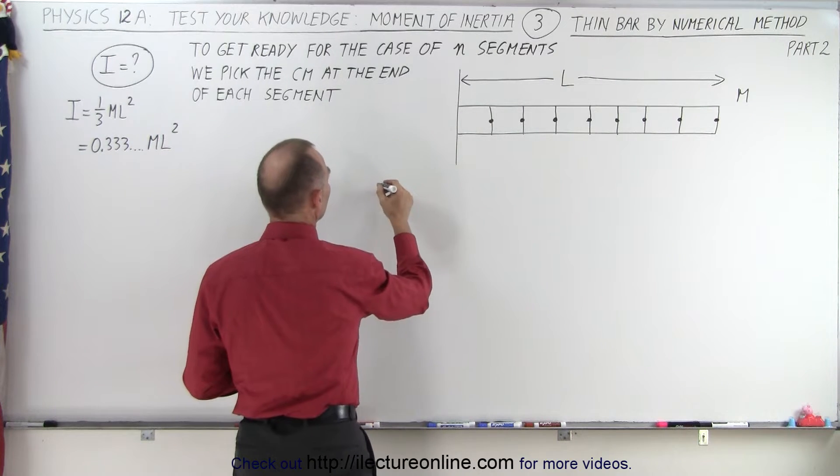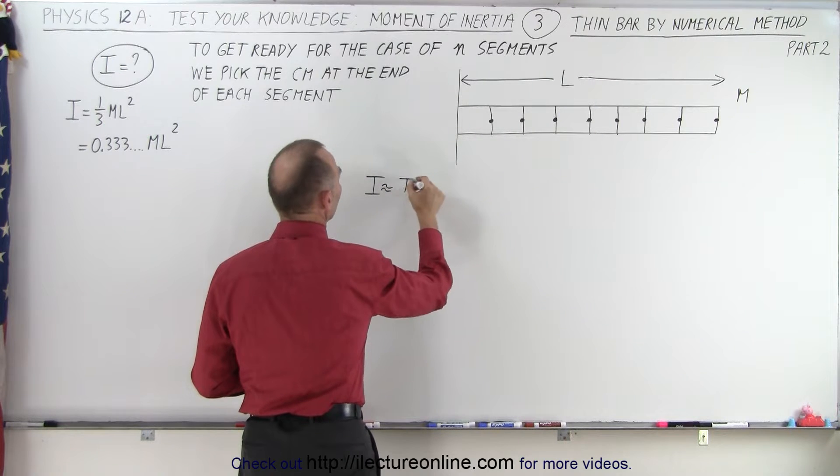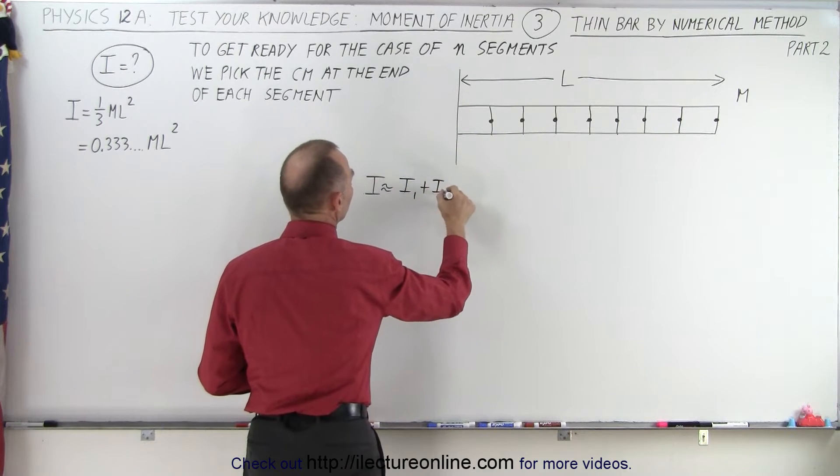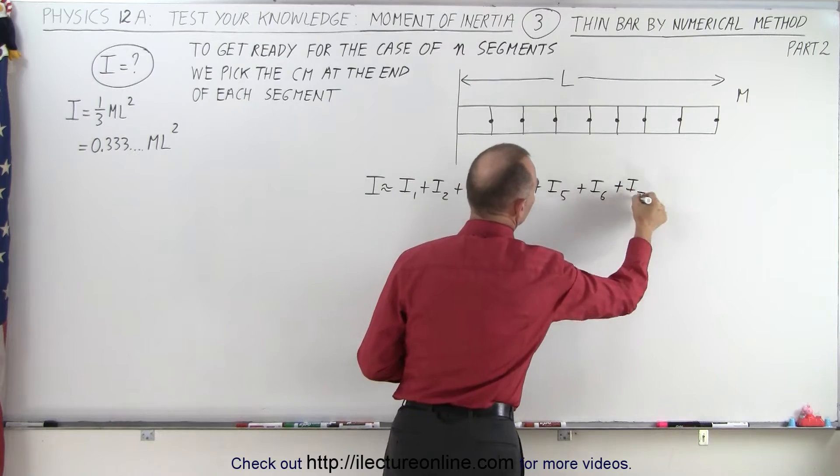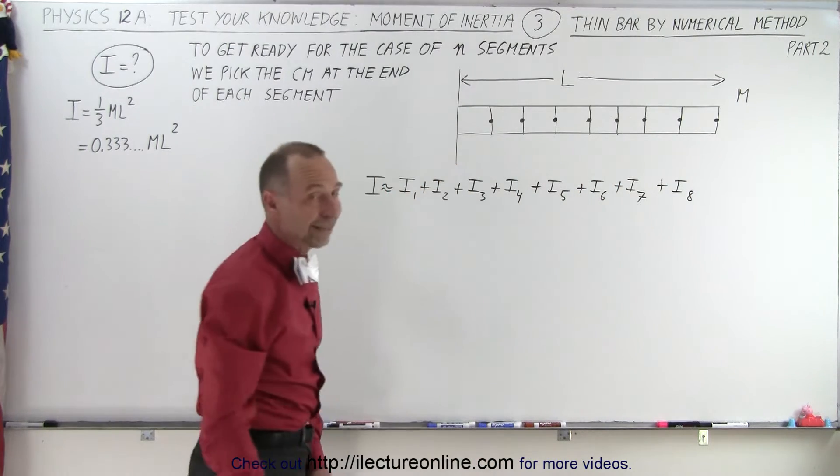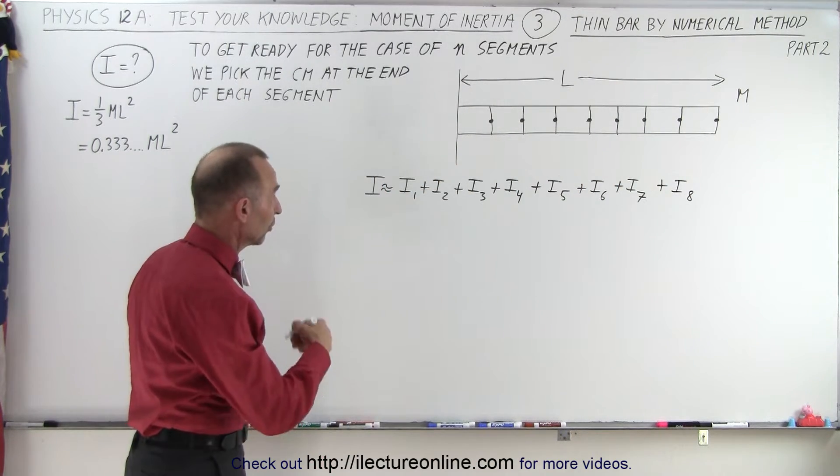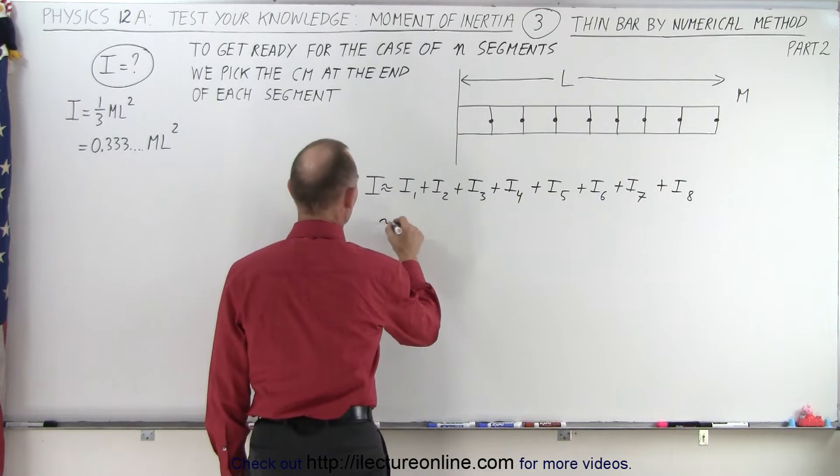So we can say that the moment of inertia I is going to be approximately equal to the sum of i1 plus i2, and so all 8 segments. So now we find the moment of inertia of each segment, so that's approximately equal to...